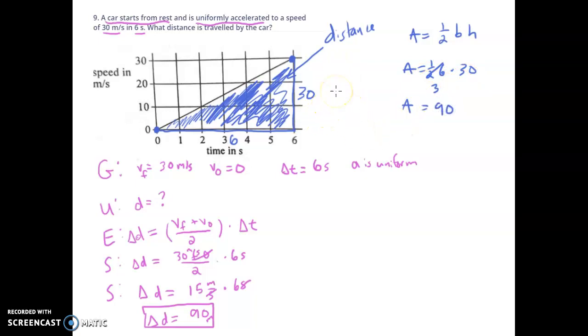And if we wanted units in here, well, our y-axis is in meters per second and our x-axis is in seconds. So if we added those in, we would actually even end up with our 90 meters. And I'm done. Okay. That's two ways of doing this.